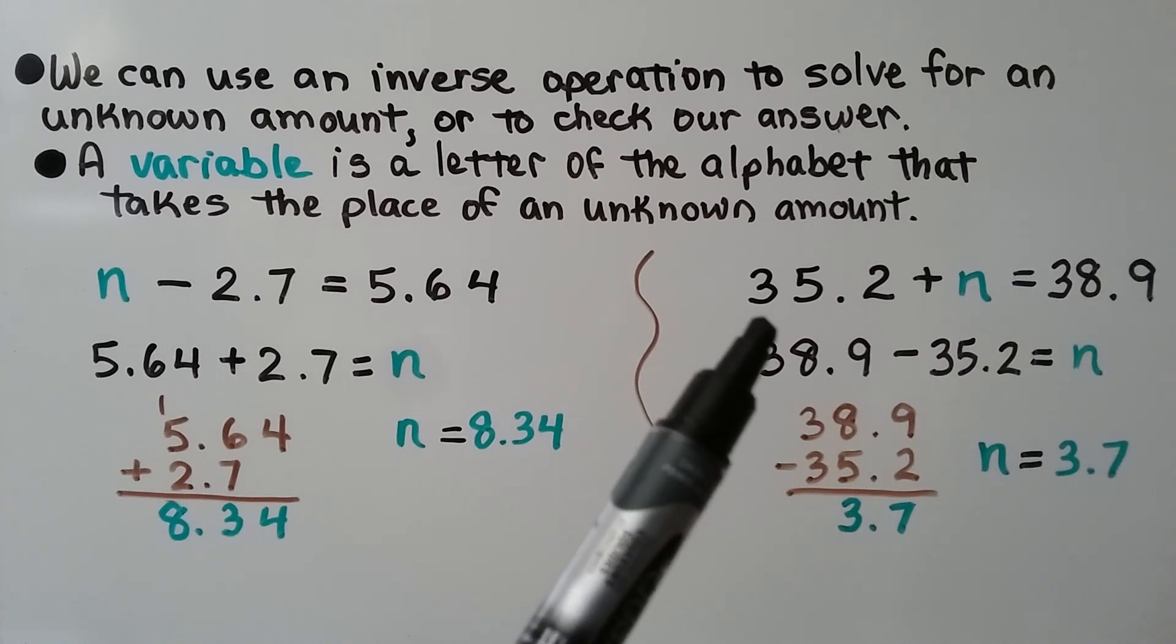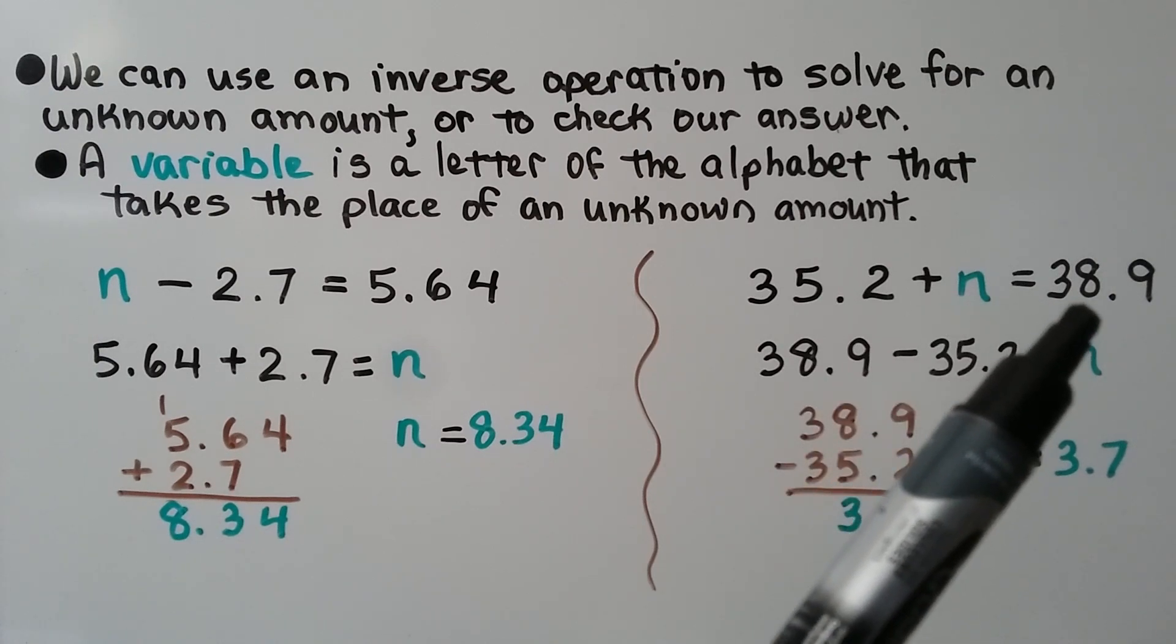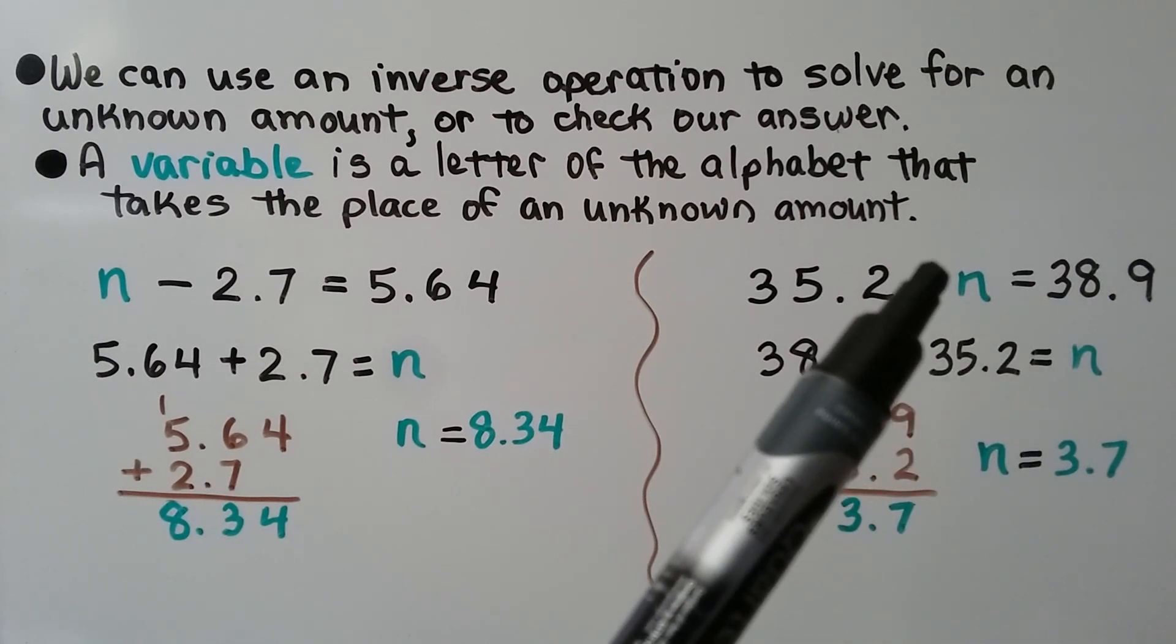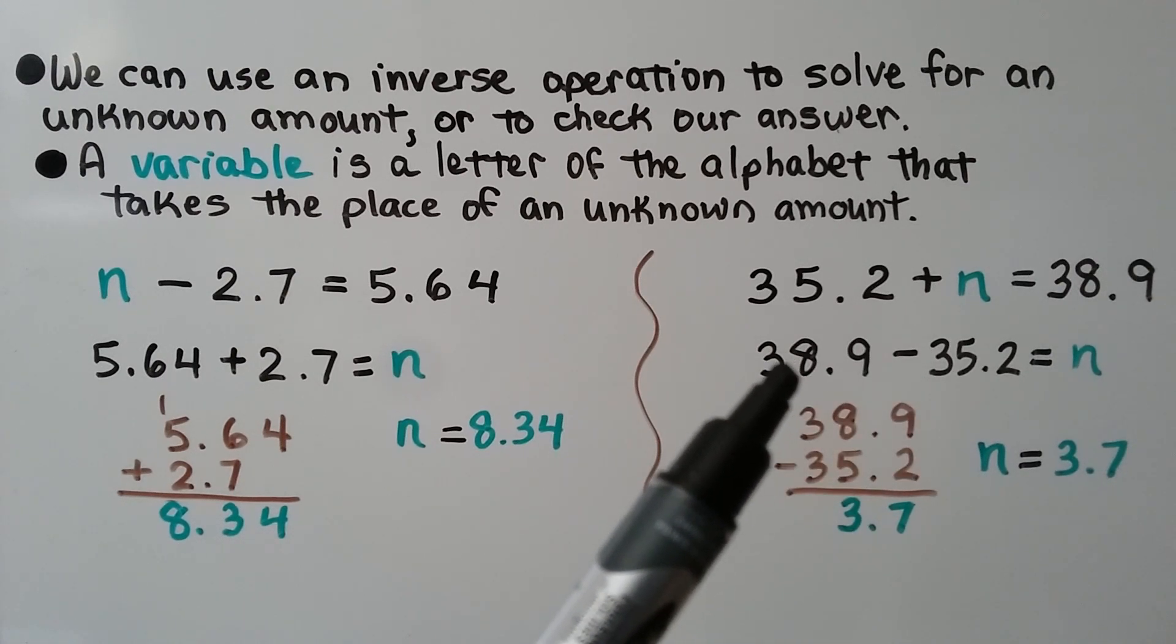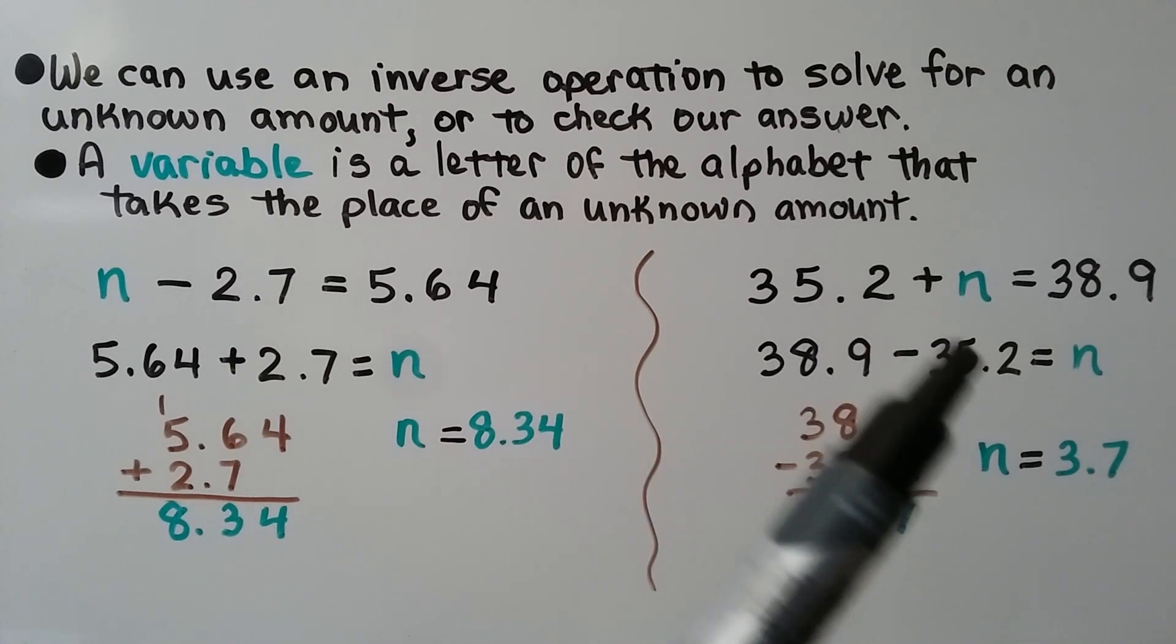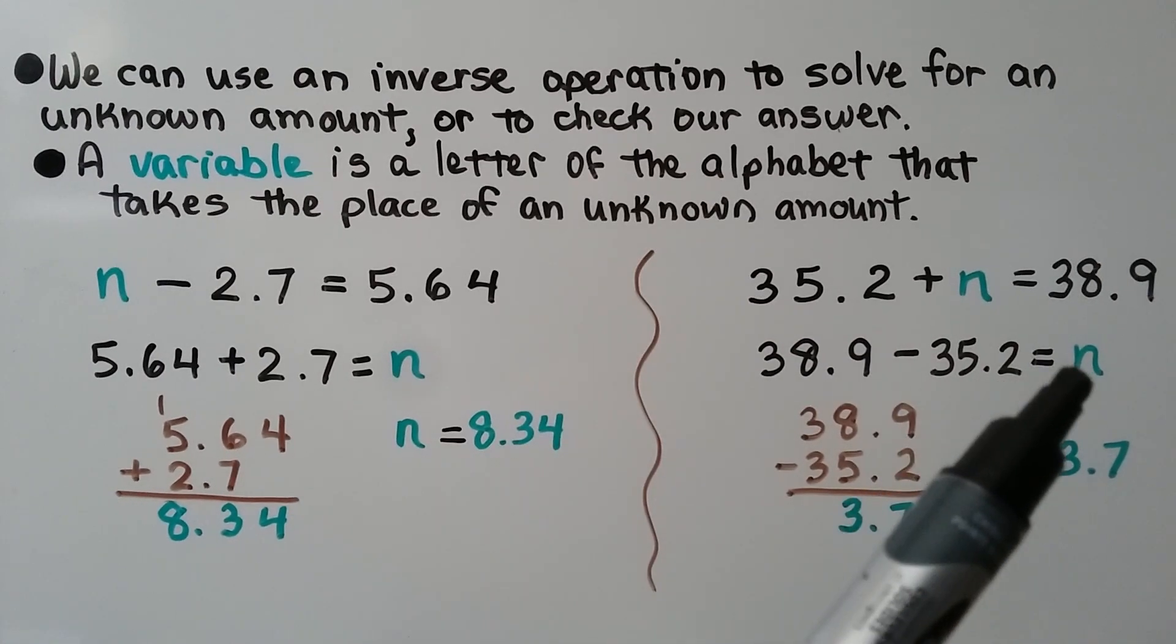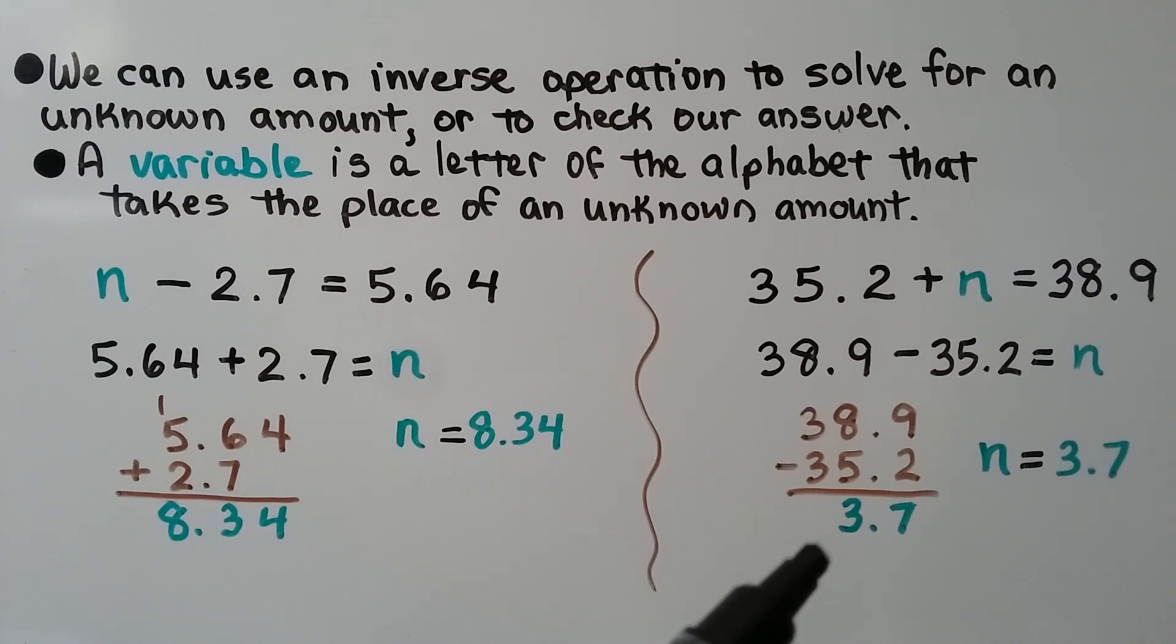Here we have 35.2 plus n is equal to 38.9. This is addition, so our inverse operation will be subtraction. We take the difference, 38.9, and we subtract this addend. That should equal n. We can stack them and use place value and see that it's equal to 3.7. So we know n is equal to 3.7.